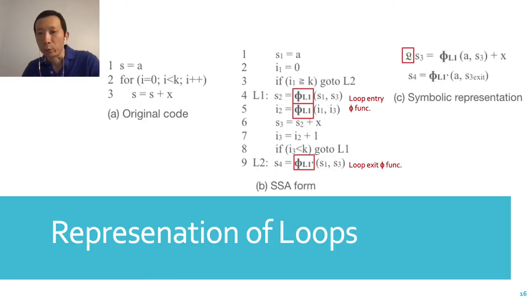What about loops? For this loop, here is its SSA form. These two phi functions are at the entry of the loop. They are called loop entry phi functions. This phi function is at the exit of the loop. It is called the loop exit phi function.